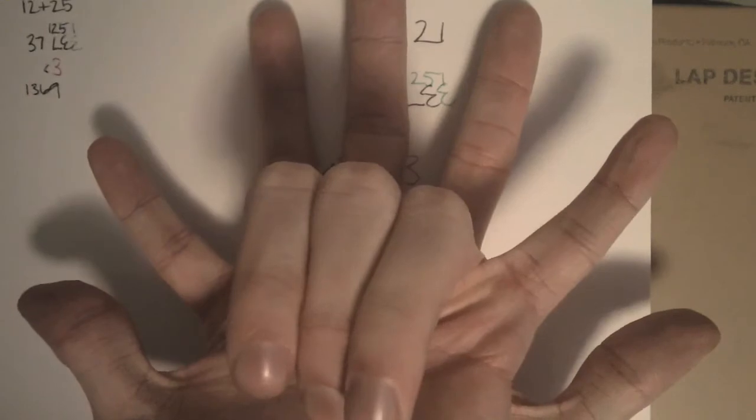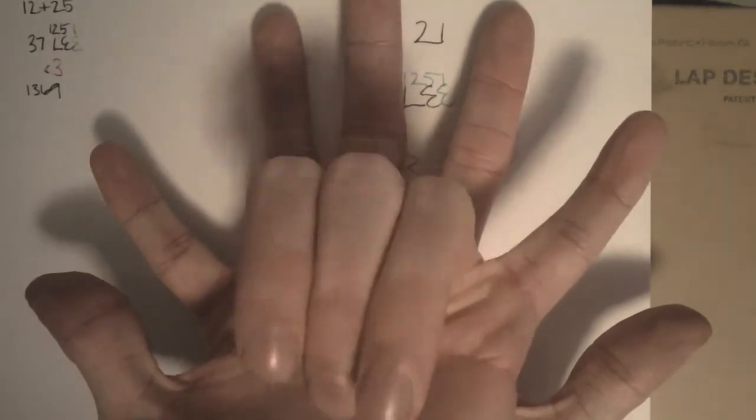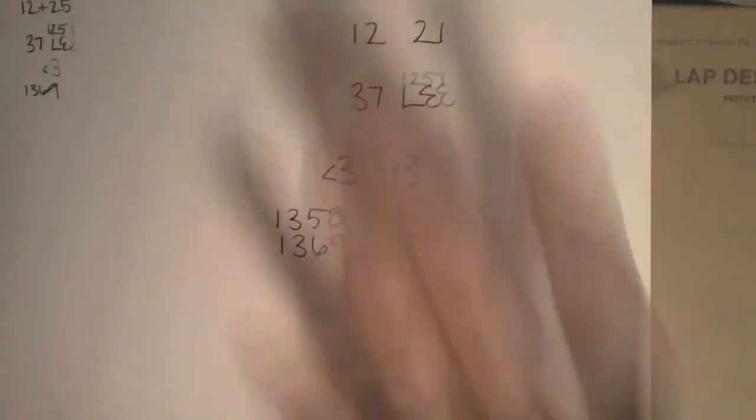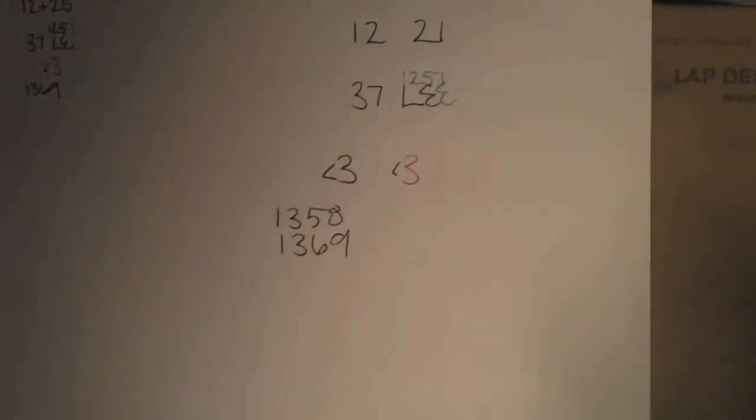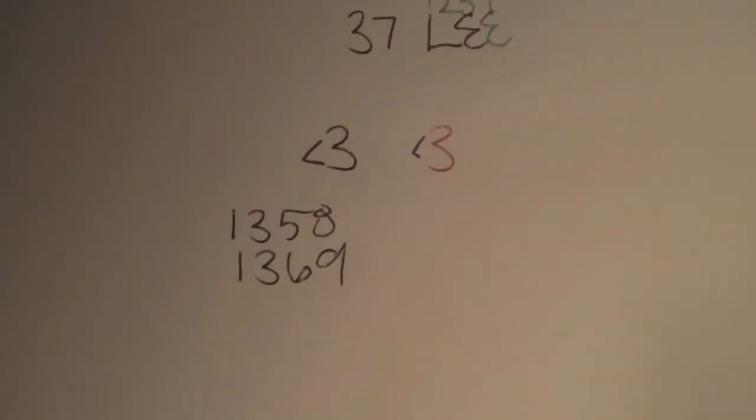Cool how the pinky kind of fills in the gap there. But yeah, 3 and 7. I was like, what do you know about the number 37? And Jenna said, well, it's the square root of 1-3-6-9.